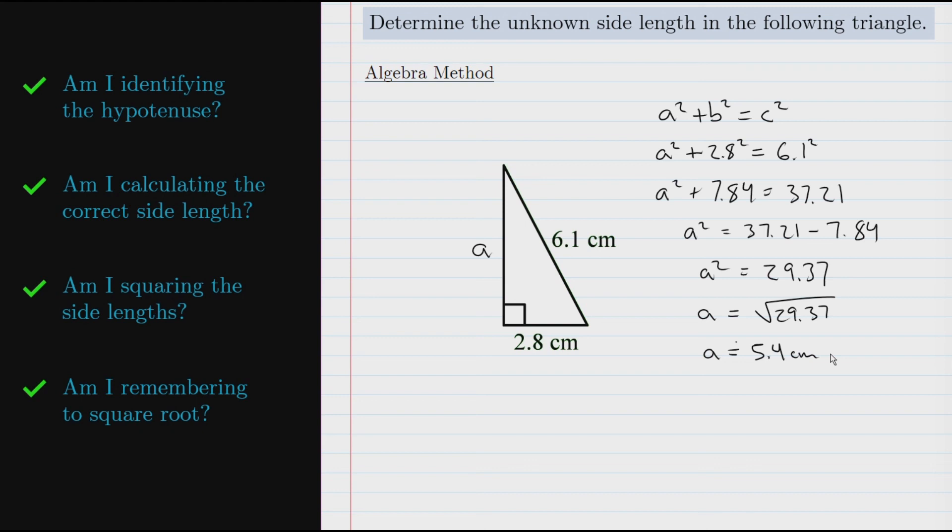So remember to always identify the hypotenuse and pay close attention to which side you're being asked to calculate. Make sure that you're squaring the side lengths to get the areas, and don't forget to square root at the end to get the desired side length.